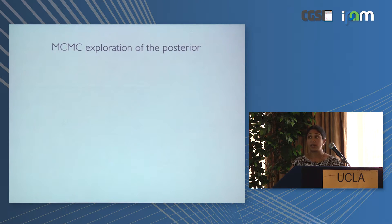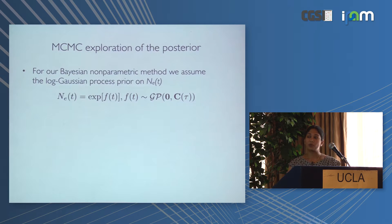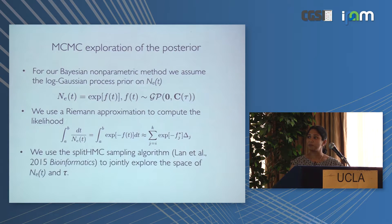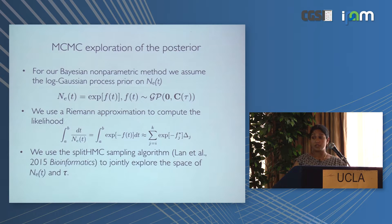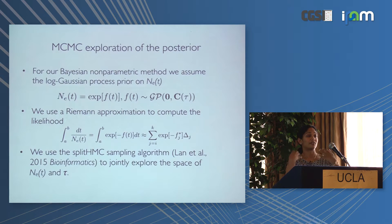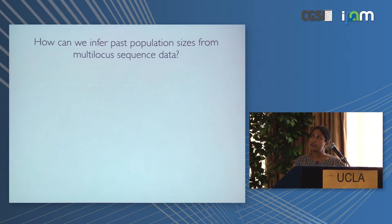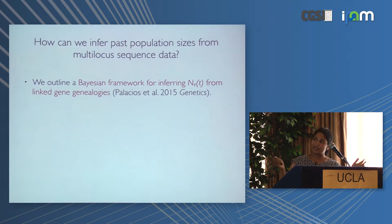For MCMC exploration of the posterior, we use a log Gaussian process prior, a Riemann approximation to compute the likelihood, and a split Hamiltonian Monte Carlo sampling algorithm. Split HMC lets us propose an entire vector of population size changes across all time change points and tau at once, rather than changing one thing at a time as in Gibbs sampling. We believe ranked tree shapes will give us traction in doing this inference directly from sequence data.